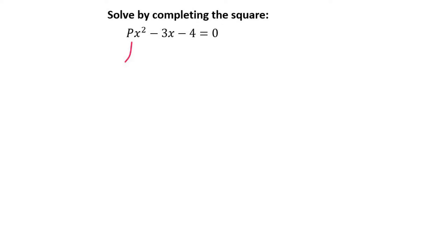It's important to remember that the number in front of the x squared must always be a 1. So we are going to have to divide everything by p, so that's going to become x squared minus 3 over p x minus 4 over p.